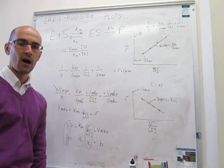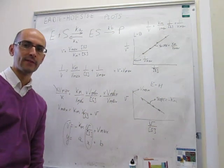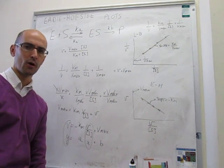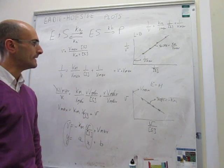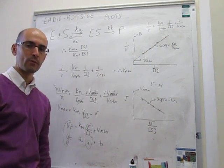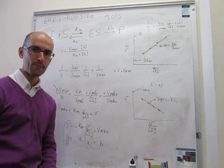This is the Eadie-Hofstee plot. There will be a couple of homework problems about this, and we have just one more topic remaining.